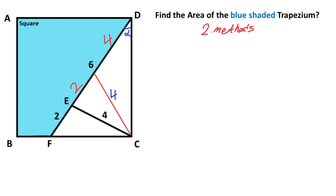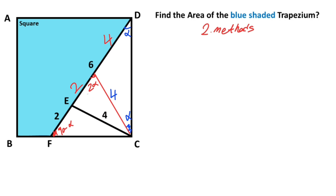Let's call this angle alpha. That means this angle must also equal alpha, because this triangle is isosceles. We know the sum of two opposite interior angles equals the exterior angle, so here must equal alpha. Focusing on the next triangle, it is also isosceles, so here must equal 90 minus alpha. These two angles are equal. Focusing on another triangle — it is also isosceles — if we draw a perpendicular line, the base must be divided into two equal parts, so these two parts each equal one unit.